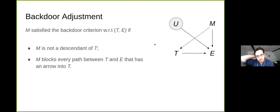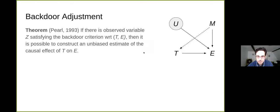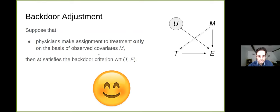Here's another thing you can do. The variable M satisfies the backdoor criterion with respect to T and E if M is not a descendant of T, that's obvious in this case. M causes T, T doesn't cause M. And M blocks every path between T and E that has an arrow into T. That one's a little difficult to check. There's this theorem from Judea Pearl in 1993. If there is some observed variable satisfying the backdoor criterion, then it's possible to construct an unbiased estimate of the causal effect of T on E. Suppose that physicians make assignment to treatment only on the basis of observed covariates, not on the basis of, suppose they just have some protocol. If their blood pressure is this and their age is between this and this and their gender is that, then we assign them here. Then M will satisfy the backdoor criterion and you can have an unbiased estimate of the treatment effect.